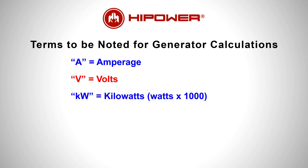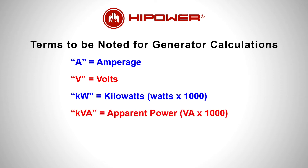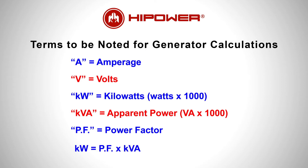Each kilowatt is 1000 watts. KVA is the apparent power within a reactive load system. PF signifies power factor, which is the relationship between KVA and kilowatts — the real available power. KW equals power factor times KVA. Single-phase power factor is usually unity or 1, and three-phase is usually 0.8.